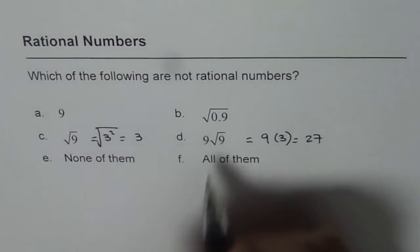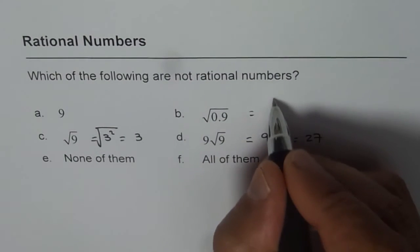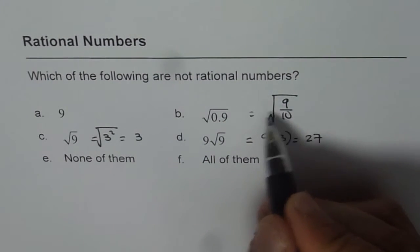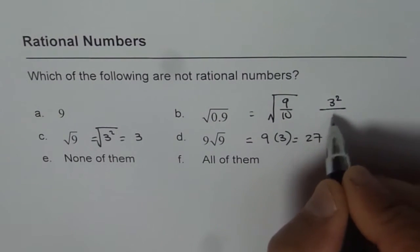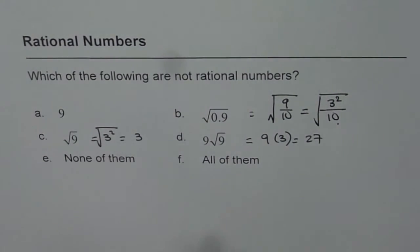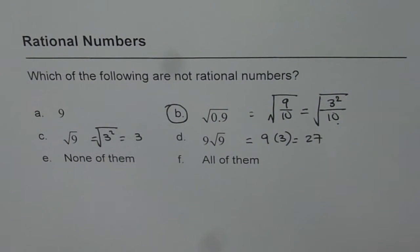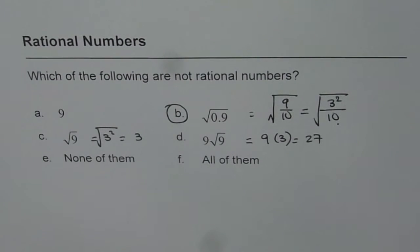How about 0.9? Square root of 0.9 is 9 over 10 under the square root. You can write 9 as a perfect square, so you can get 3 squared, but 10 is not a perfect square. And that is why this one is not a rational number. Do you understand? 10 is not a perfect square, and that is why square root of 0.9 is not a rational number. Thank you.